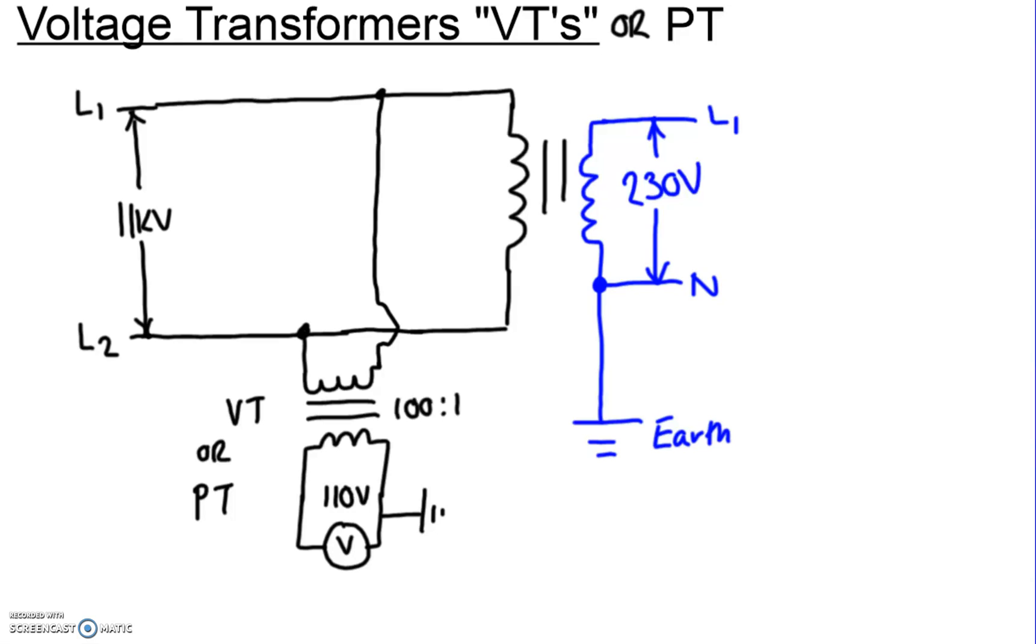Voltage transformers are used generally on higher voltage. This example in front is a very basic sketch which could represent a small substation. We've got an 11 kilovolt intake here, transformer primary, and then we have a 230 volt secondary.